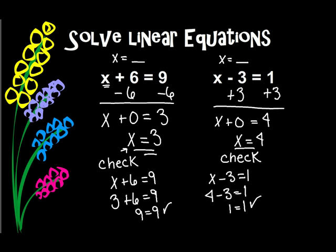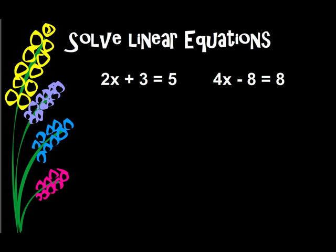Let's look at a couple more that are a little more complicated. Let's solve these two linear equations. Remember, when I mean solve, I want x equal to something — I want it by itself. So I want 2x to be sitting over here by itself for now. So if I have a plus 3, I do the opposite of what I see — I'm going to subtract 3. Remember, you do it to both sides of the equal sign. We need to keep this equation balanced.